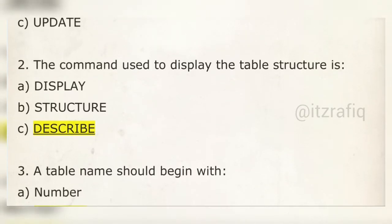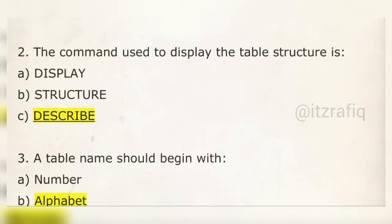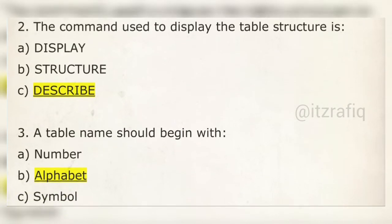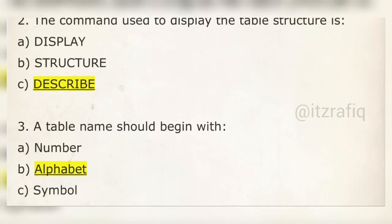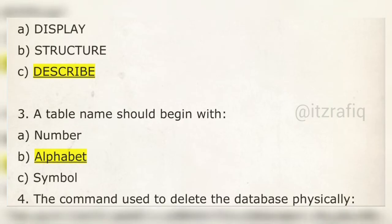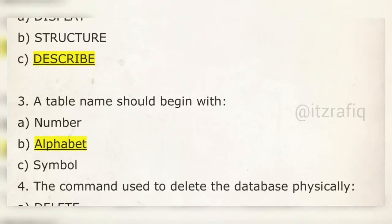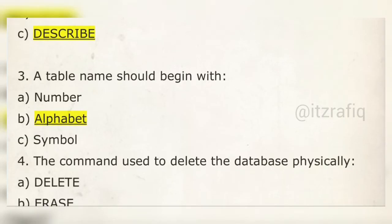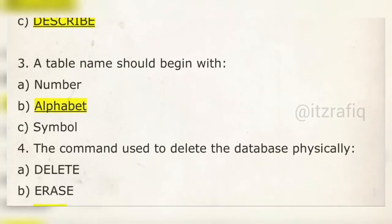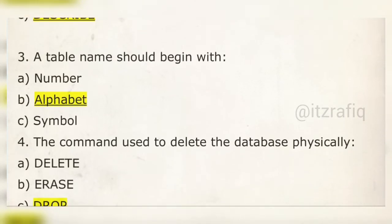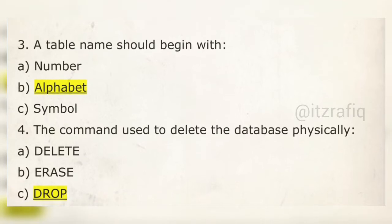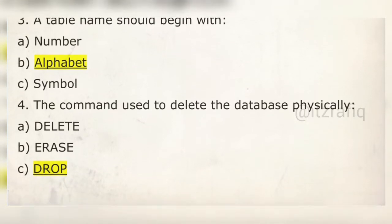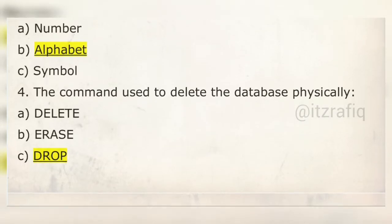Structure means the foundation of a table, and we use the DESCRIBE command for that. Number three: a table name must begin with an alphabet — if it starts with a number, it is invalid. Number four: the command used to delete a database physically is DROP.